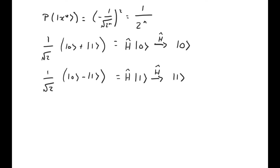If we make a measurement on a system in the state |0⟩, we're guaranteed — with probability 1 — to find that system to be in the state |0⟩. And if we have a system in the state |1⟩ and make a measurement, we'll find it to be in the state |1⟩. So if we apply a Hadamard gate to a qubit in the first state and then measure, we're guaranteed to find it in state |0⟩. And if we apply a Hadamard gate to a qubit in the second state followed by a measurement, we're guaranteed to find it in state |1⟩. So we can tell these two states apart — all we have to do is apply a Hadamard gate to the unknown state and then make a measurement.